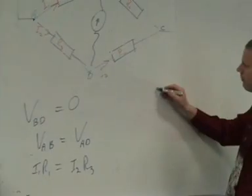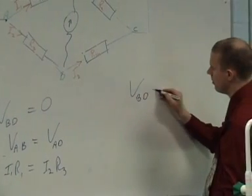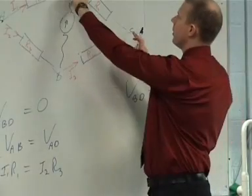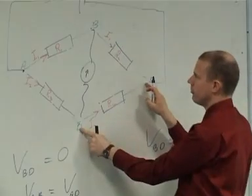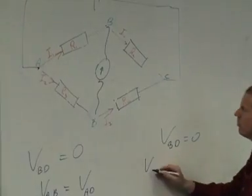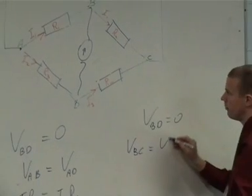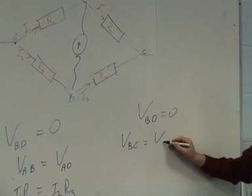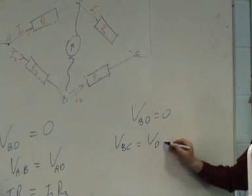Now, similarly, we can come over here and say if VBD equals zero, what does that tell me about that potential difference and that potential difference? Equal. They're equal. So VBC equals V what? DC. VDC.